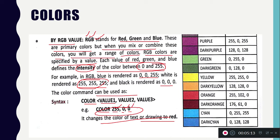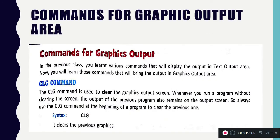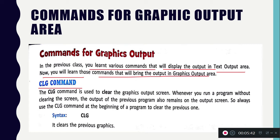Now coming to the commands for the graphic output area. In the previous class we studied commands which display in the text output area. Now you will learn commands which work with the graphic output area. First of all is the CLG command. CLG command is used to clear the graphic output screen.